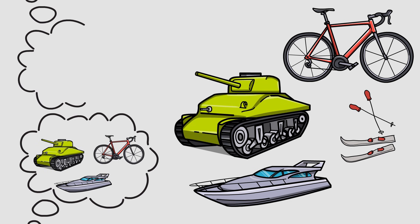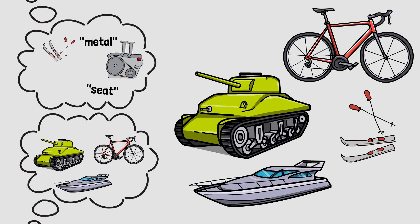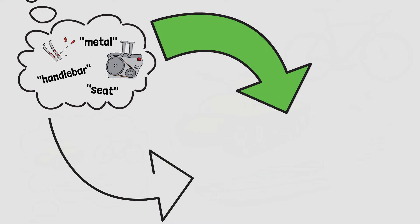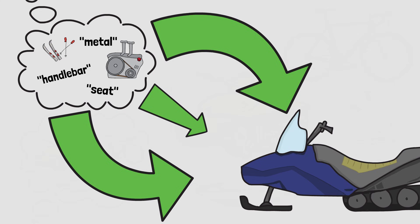But first principle thinkers would see a motor, metal treads, skis, a seat, handlebars, and many more. Then they would think about what you can create out of these different parts. Do you know it? You can create a snowmobile out of it.